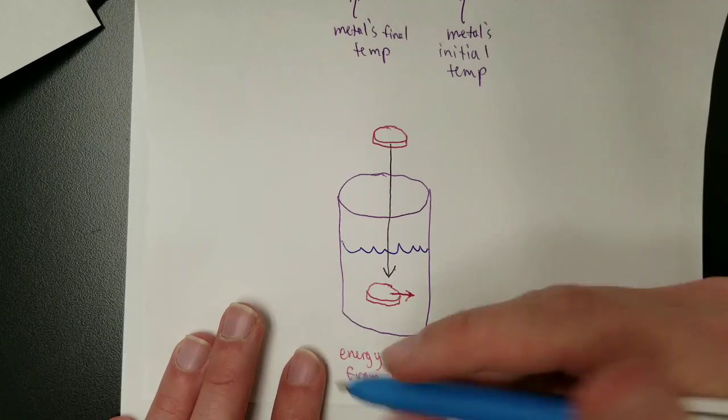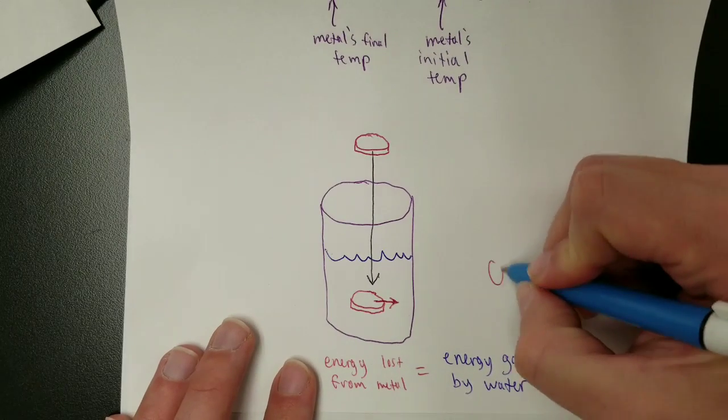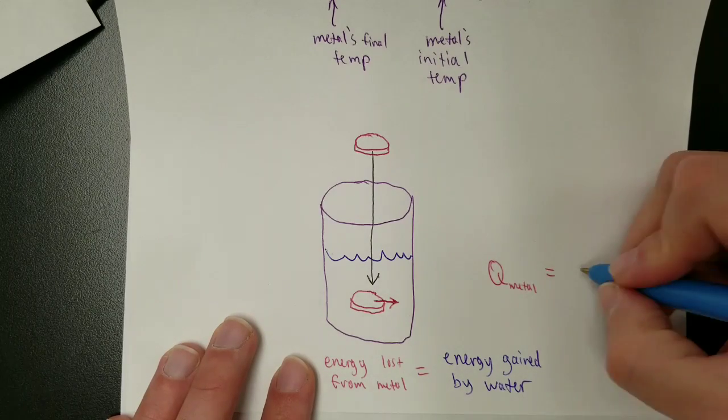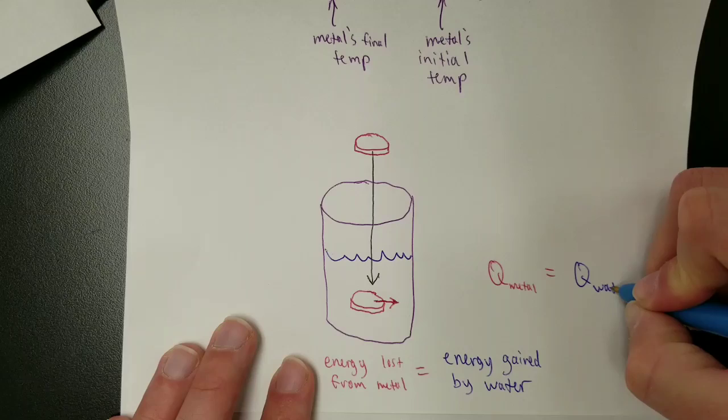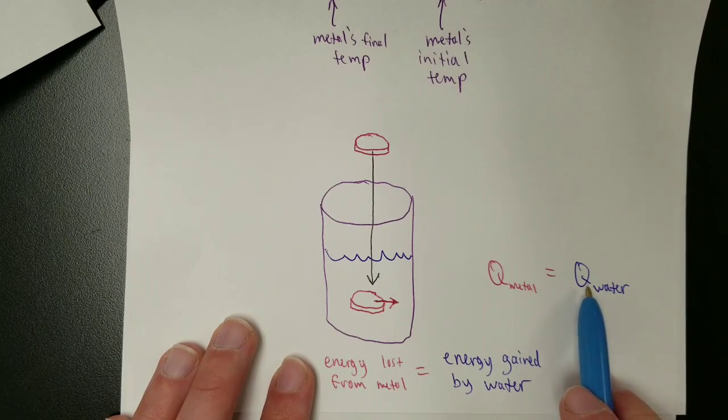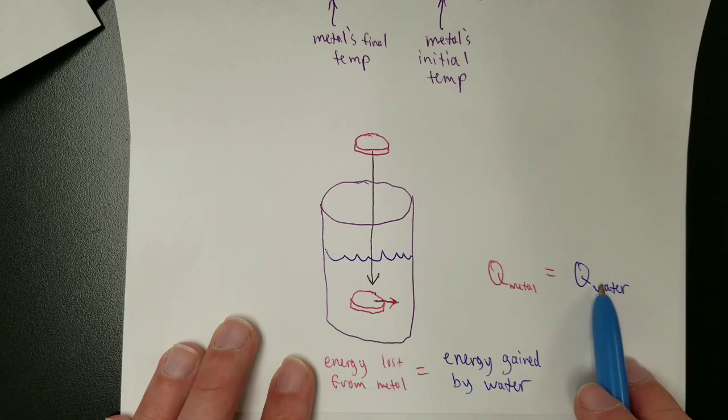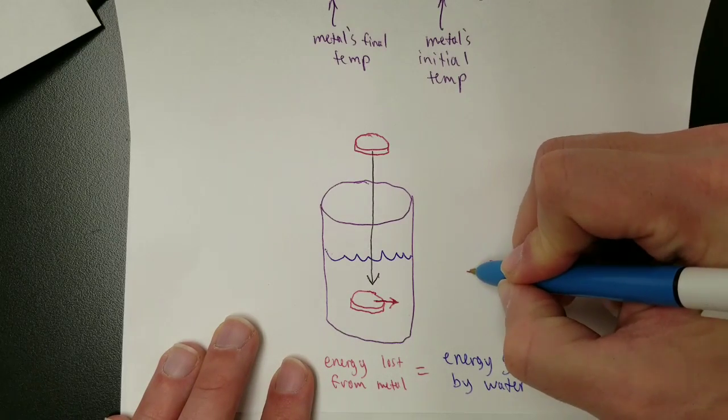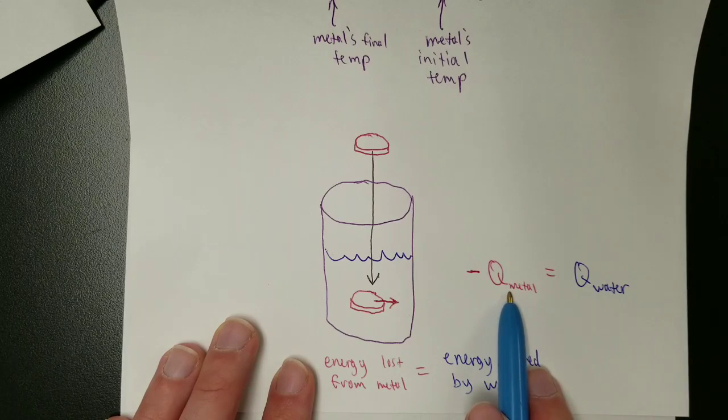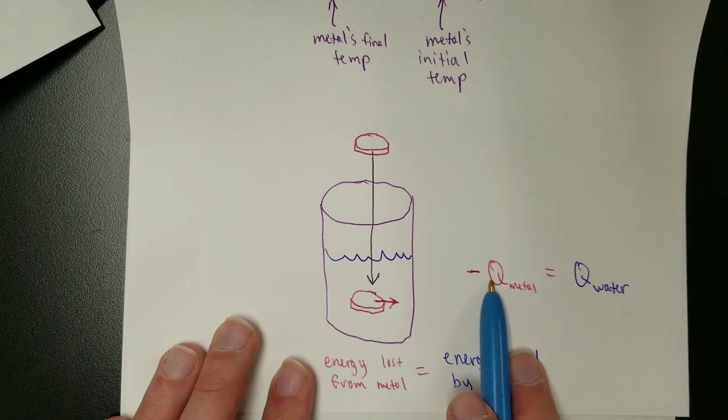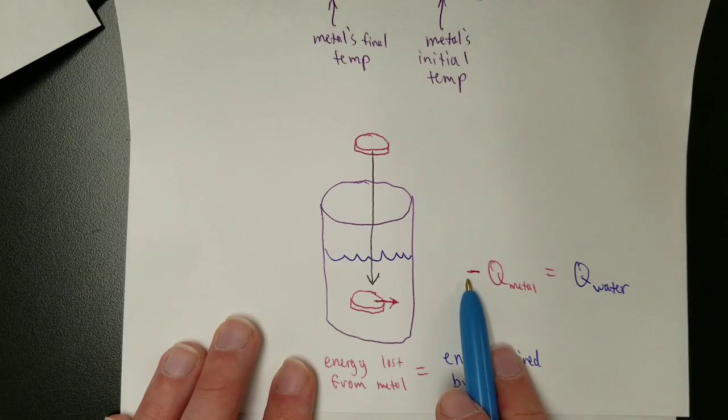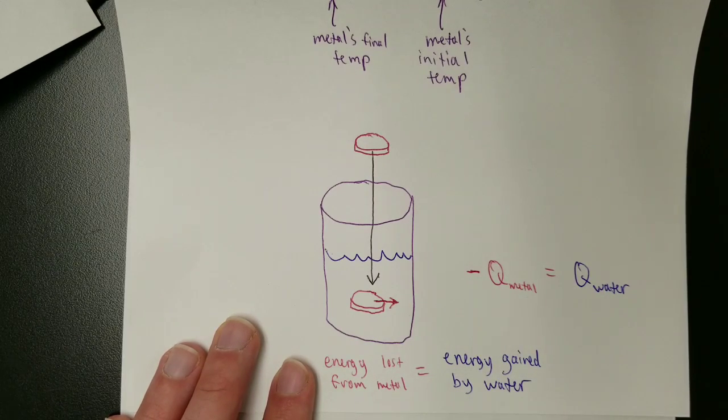So whatever the Q value for the metal is, it's the same number as the Q value for the water. But here's the deal. If the water gains energy, its value of Q will be positive. If the metal loses energy, its value of Q will be negative. They're going to be opposites. Same number, if the metal loses one joule, water gains one joule. But if it loses joules, it's going to have a negative sign on it. If this is gaining joules, it's going to have a positive sign on it.